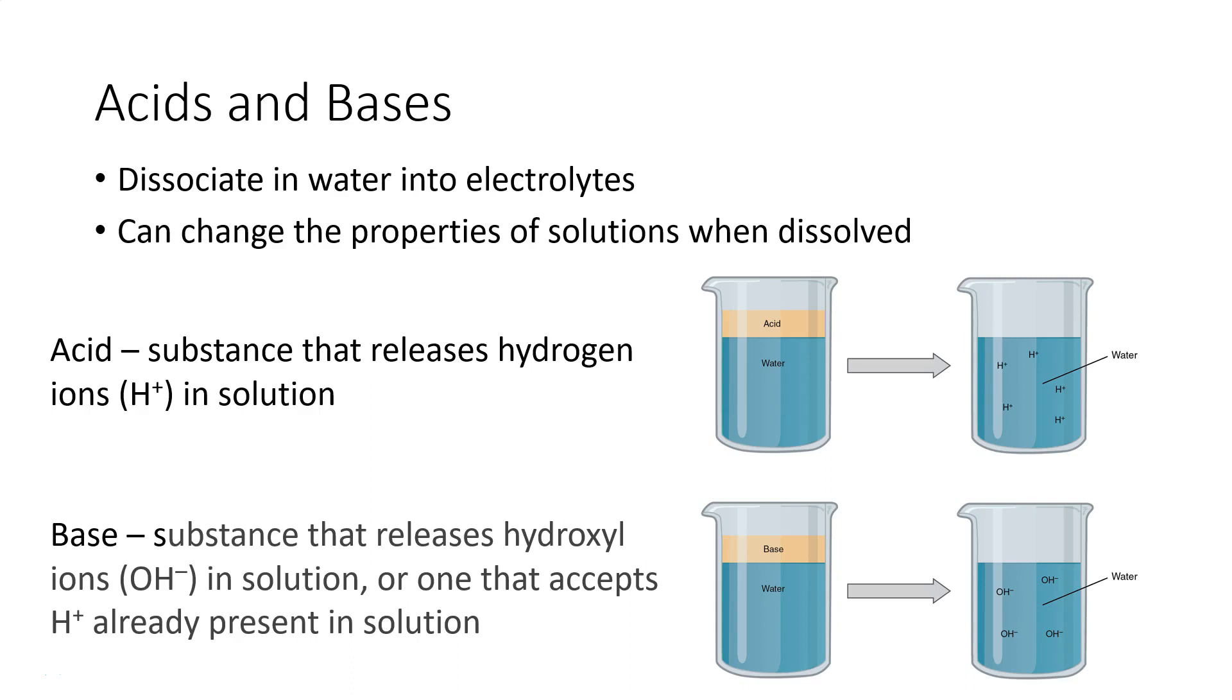An acid is a substance that releases hydrogen ions in solution. Because an atom of hydrogen has just one proton and one electron, a positively charged hydrogen ion is simply called a proton, and this proton is highly likely to participate in chemical reactions.